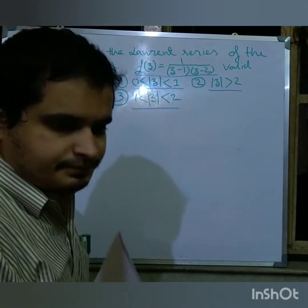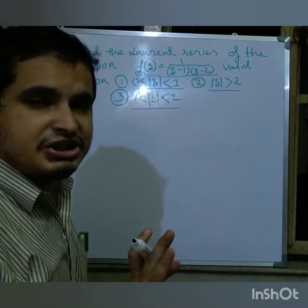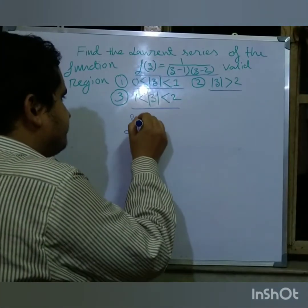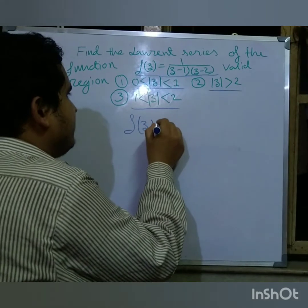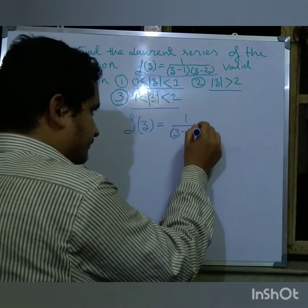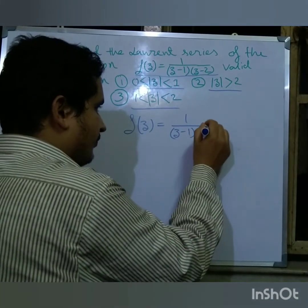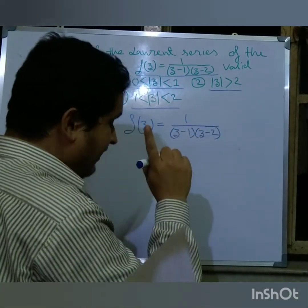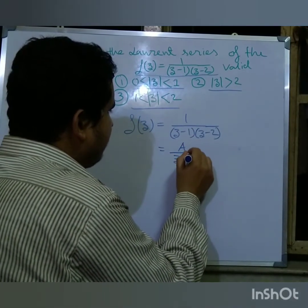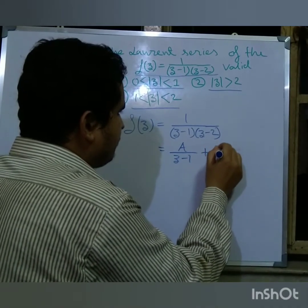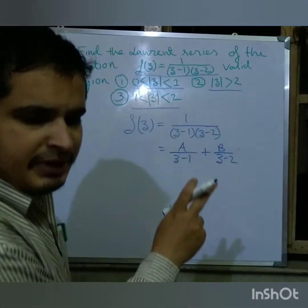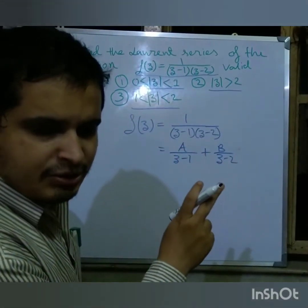To solve this problem we have to do partial fractions. f(z) equals 1 divided by (z minus 1)(z minus 2). Using partial fractions, we write A over (z minus 1) plus B over (z minus 2). Now I will find the values of A and B — the method is very simple.